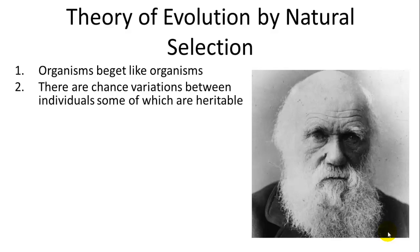Second, there are chance variations between individuals, some of which are heritable. Darwin didn't know how to fully define this, but he did know that there was something being inherited from one generation to the other, and that as you inherited these traits there was a chance you could have a variety of different types.